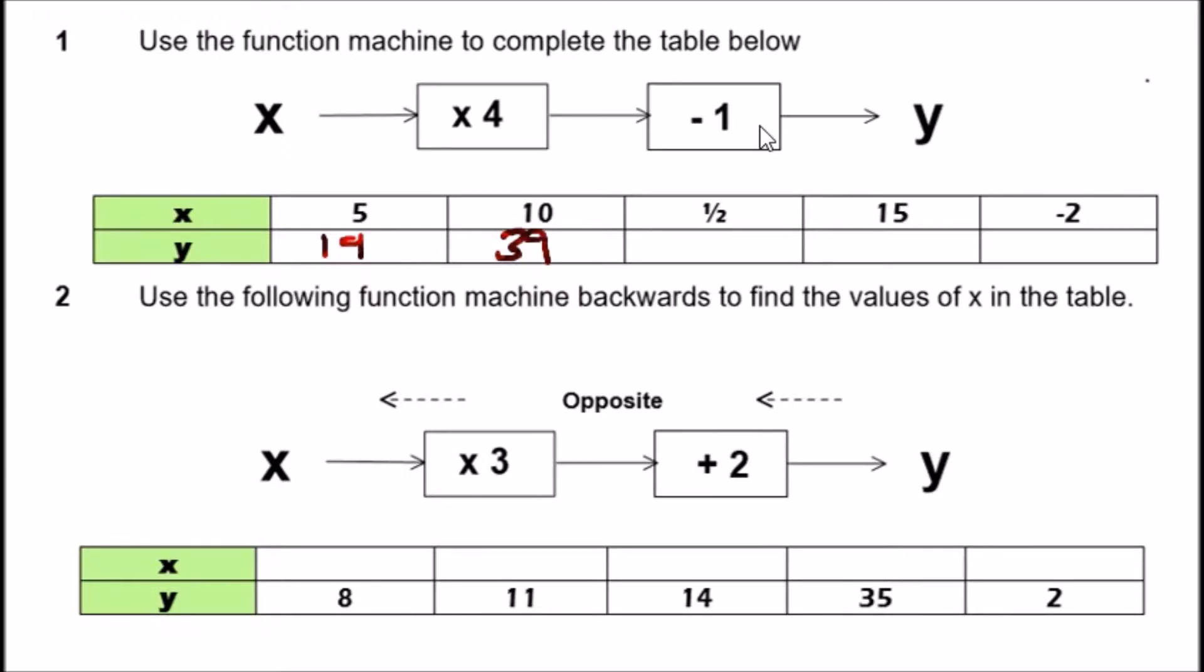½ times 4 is 2, so that means half of 4 is 2, 2 take away 1 is 1. If you put x is 15, we've got 15 times 4 is 60, 60 take away 1 is 59. Now minus 2: we've got minus 2 times 4 which is minus 8, minus 8 take away 1 will give us minus 9. Excellent guys, that was pretty good.